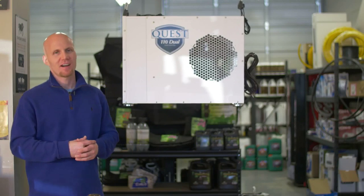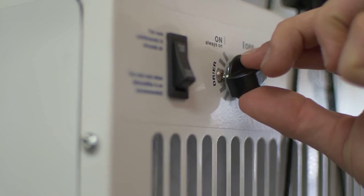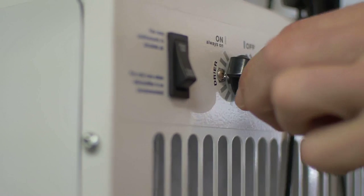To control the dehumidifier, there is an analog or mechanical control on the front of the unit. The reason we use mechanical controls and not digital controls is for durability.